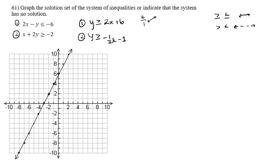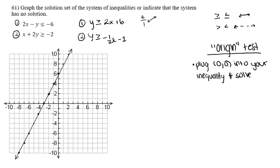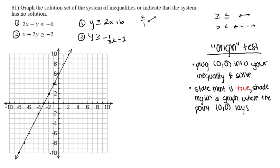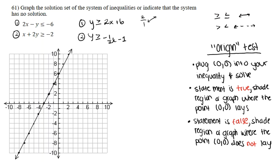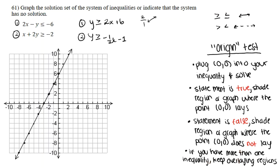With the solid line drawn, I'll use the origin test to determine where to shade for the first inequality. The origin test — or zero-zero test — works by plugging the point (0, 0) into your inequality and simplifying. If the resulting statement is true, shade the region where (0, 0) lies. If false, shade the region where (0, 0) does not lie. When you have more than one inequality, keep only the overlapping shaded regions.